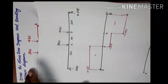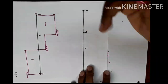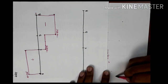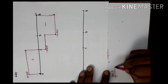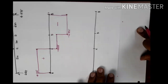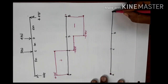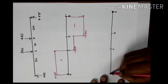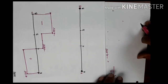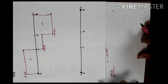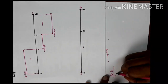Now we look at the bending moment diagram. The basic rule for a bending moment diagram: at points A and B, the end moment is equal to zero, because in a simply supported case the end moments are zero.